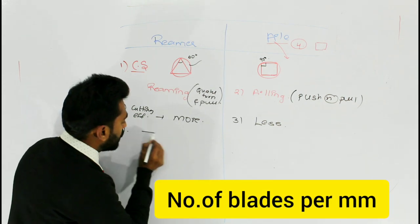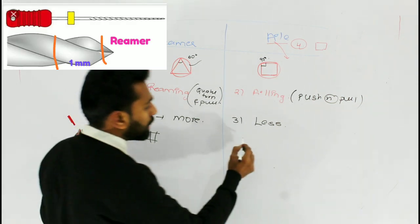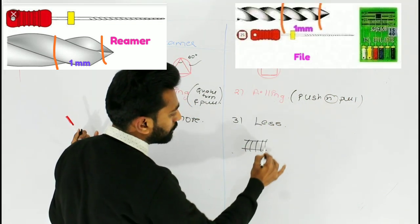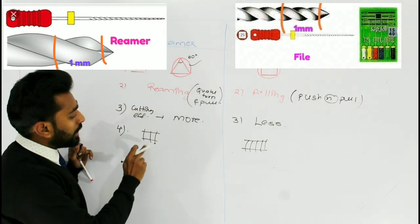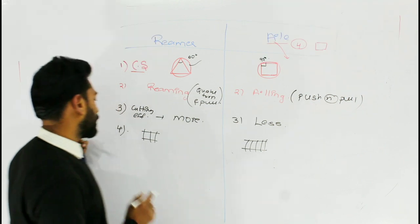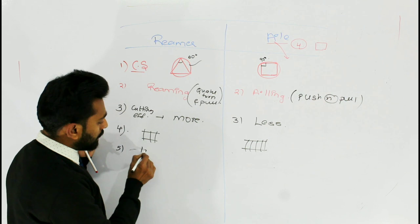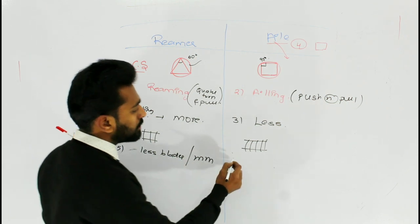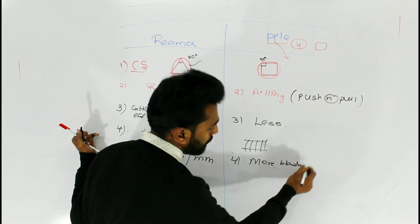If you take 1 mm of a reamer, you have a less number of blades. And if you take 1 mm of a file, you have more number of blades. So the reamer has less blades per millimeter, whereas the file has more blades per millimeter.